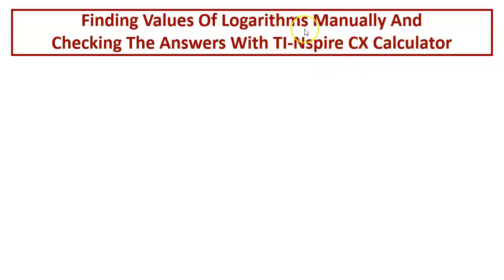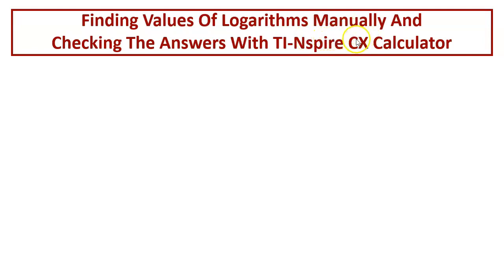Why should we be finding the values manually first? Because that is what we have learnt so far. We will be first of all finding the given logarithm values manually. Of course we cannot find the value of every logarithm manually, but we will be taking up those logarithms whose values can be found manually. And then we will be checking our answers with the calculator so that we understand the working of the calculator and how to find logarithm values using the TI-Nspire calculator. Once we know the method we can find the value of any other logarithm, but first of all we have to learn the process.